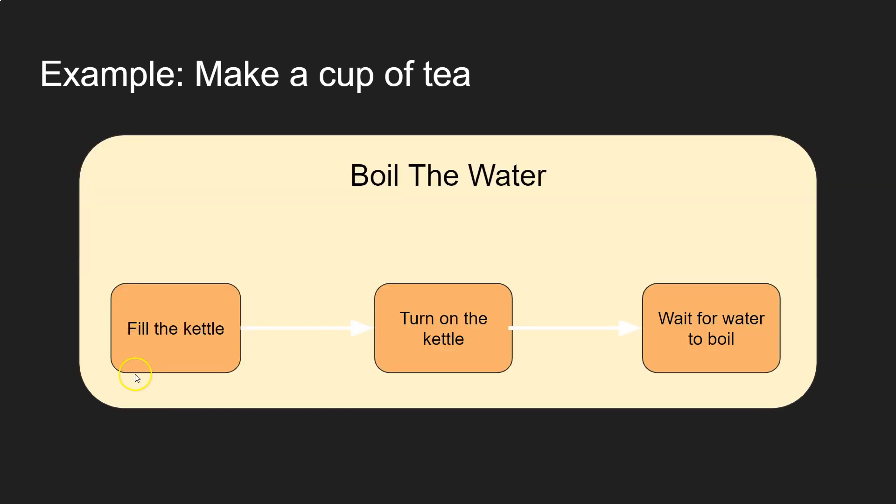So boil the water, well that in itself breaks down into three parts. You've got the bit where you fill the kettle, then you've got the bit where you turn the kettle on and make sure it's working, and then finally you've got the bit of the process where you just wait for the water to boil before moving on to the next step in the process. So that's the sub-step for boiling the water and then again we just break it down.